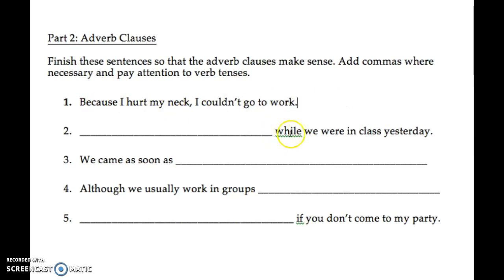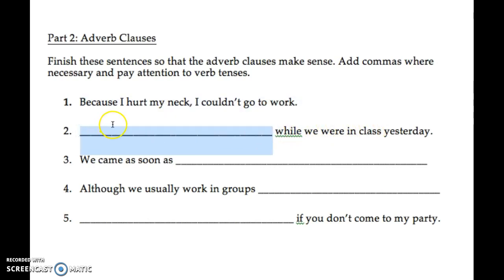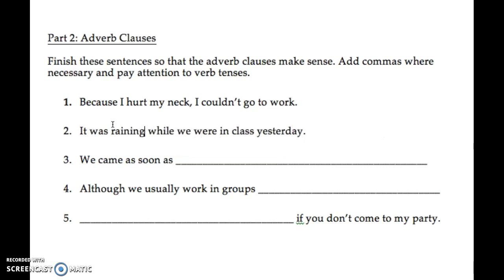'While we were in class yesterday' — 'while' means at the same time. Some answers were strange because the two things couldn't happen simultaneously. So what happened at the same time? For example, 'it was raining' — it was raining and we were in class at the same time. Notice I didn't put a comma there. Why? Because we have our independent clause first, so no comma.